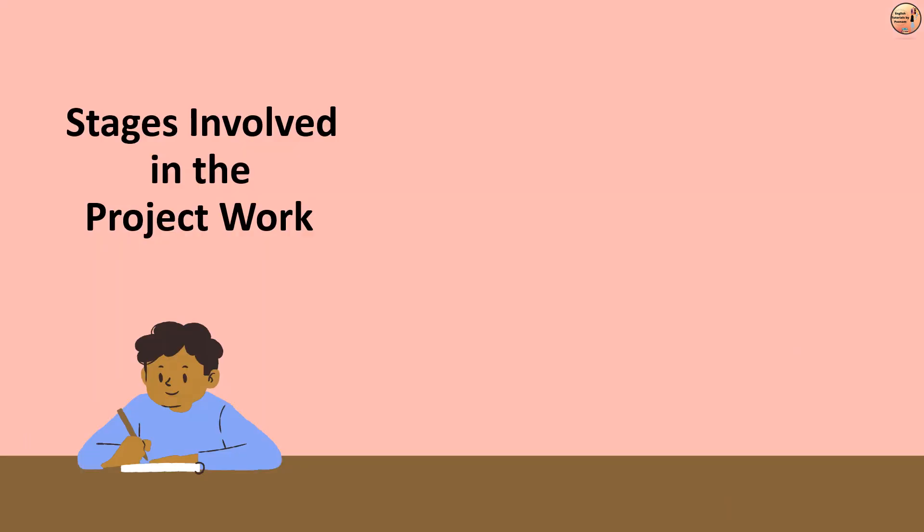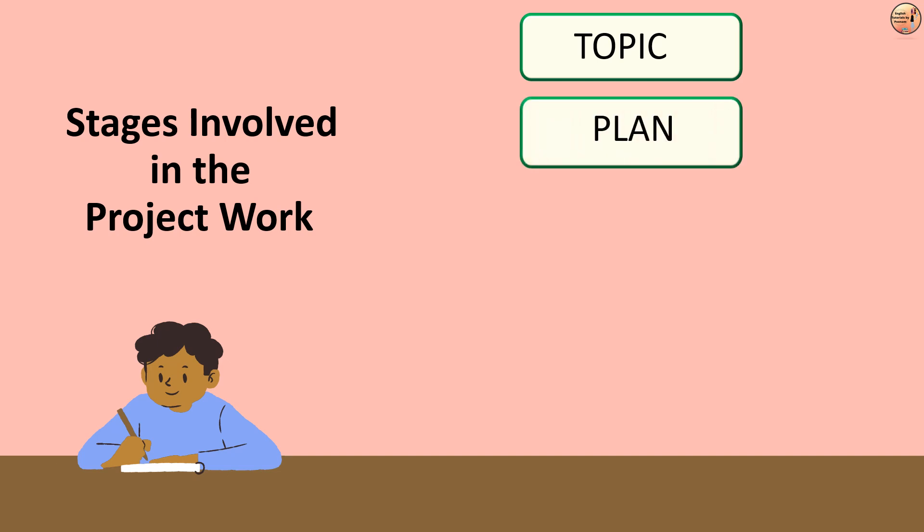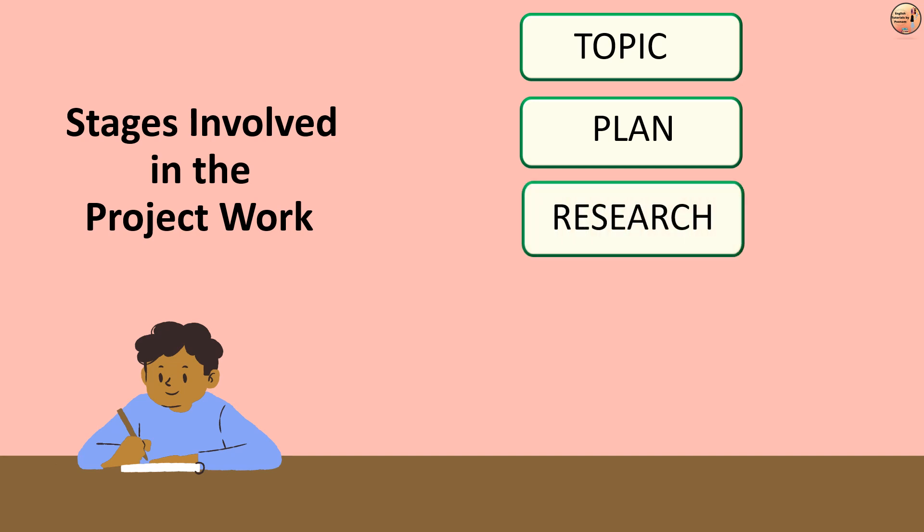Let's focus on the stages involved in the project work. The first stage is topic selection. While selecting a topic, you need to be very careful. Your topic should be age-appropriate, allow research, and give you an opportunity for speaking and listening. Most importantly, it should have a clear open-ended question. The next stage is planning, which includes your action plan. Here you need to draft a plan as a team or as an individual and mention the work delegated to team members by the group leader.